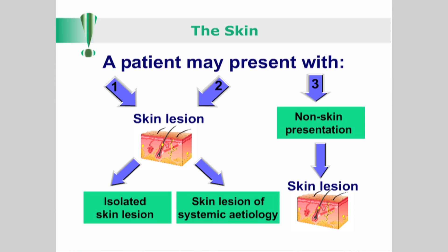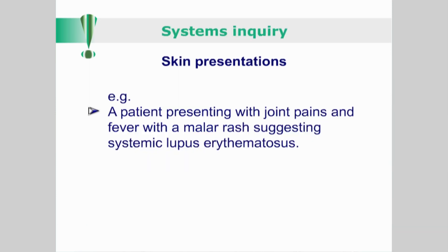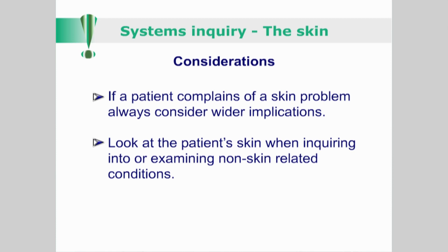And thirdly, a patient may present with a complaint other than a skin problem, but the clinician may find evidence of skin manifestations, providing supporting evidence in the differential diagnosis. For instance, a patient presenting with joint pains and fever with a malar rash suggesting systemic lupus erythematosus. Therefore, when dealing with a patient complaining of a skin problem, even if it appears to be a localized lesion, always consider wider implications. Conversely, look at the patient's skin when inquiring into or examining non-skin related conditions.